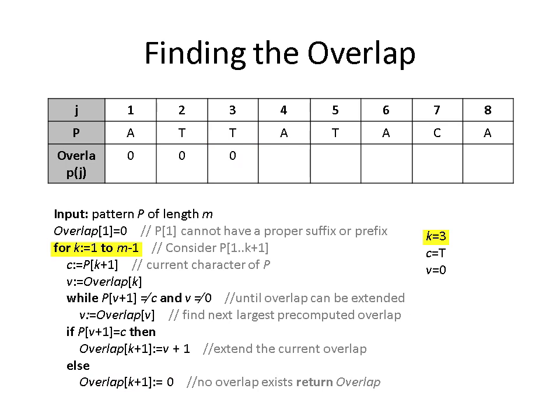For position 4, our current character is A, V equals 0. We do not go into the while loop; however, our if statement is satisfied, so the overlap of position 4 is set as 0 plus 1, or 1. For position 5, our current character is T, V now equals 1. We again do not go into the while loop, but our if statement is satisfied so our overlap is extended, and the overlap of position 5 is 2.